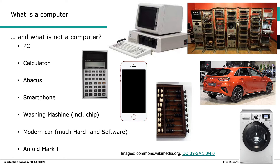The smartphone, according to our understanding, is clearly a computer — you can download apps and change what it does. The abacus is not a computer; you are very limited to moving beads forward and backward. The car and the washing machine are in a gray zone. From a user's perspective, they are not computers because you cannot download software to make the car a word processor. However, a technician who can download software into the car would have that ability — so they remain in a gray zone.